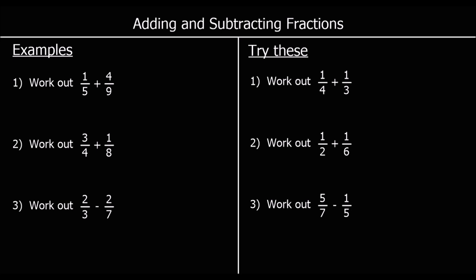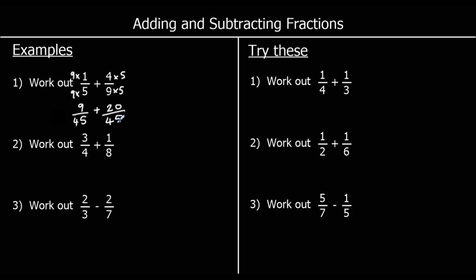Question one: work out one-fifth plus four-ninths. They've got different denominators, so we need to make them the same. We multiply the top and bottom of one-fifth by nine, and the top and bottom of four-ninths by five. Both denominators will be nine times five, which is 45. This gives us nine forty-fifths plus twenty forty-fifths. Nine plus twenty is twenty-nine, so the answer is twenty-nine forty-fifths.